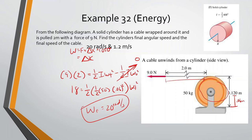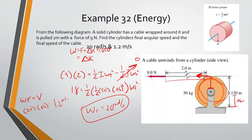For the final speed of the cable: the cable moves tangentially, so we use ω × r = v. With ω = 20 rad/s and r = 0.06 meters, the cable's speed is 20 × 0.06 = 1.2 meters per second.